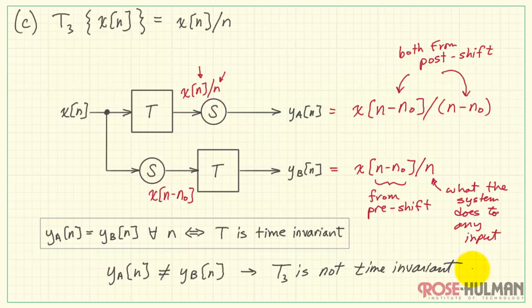We see that YA is not equal to YB. Therefore, system T3 is not time invariant. That wraps it up for this example.